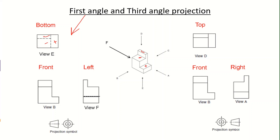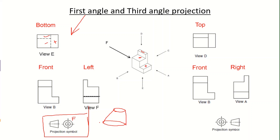All three different surfaces we are not able to see clearly from the bottom, so we have to make use of hidden lines. Those hidden lines are shown here, and once you show the hidden lines it means the projection is taken from the bottom side. The projection symbol in the first angle projection method uses a conical frustum to show the front view, and the right side projection based on this front view is shown to the left in the first angle projection.